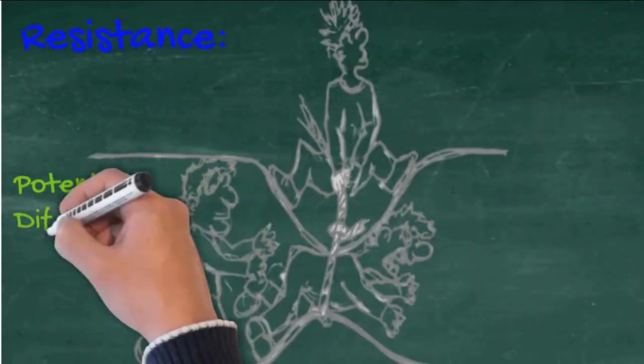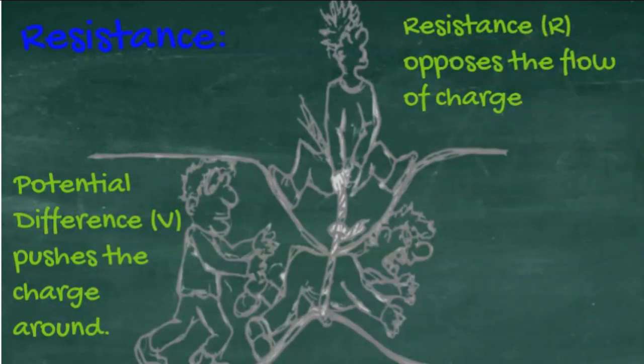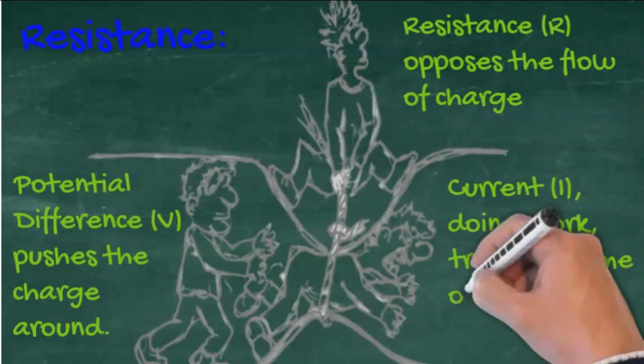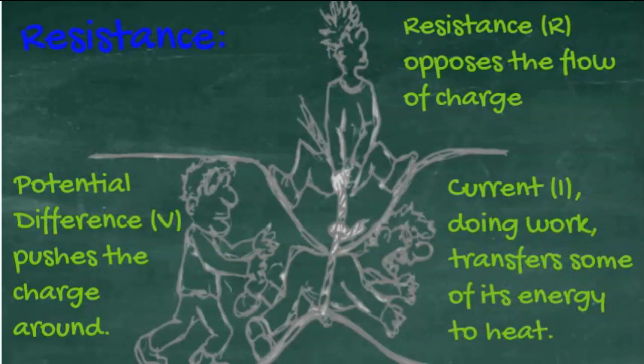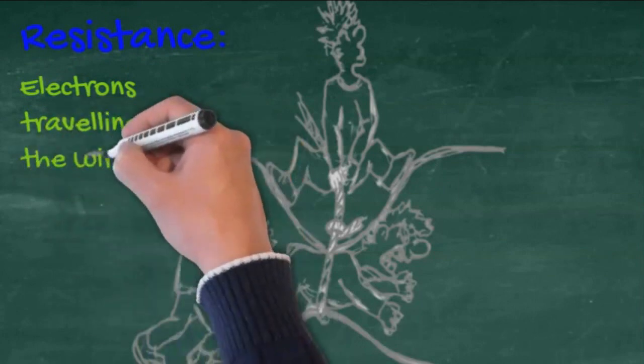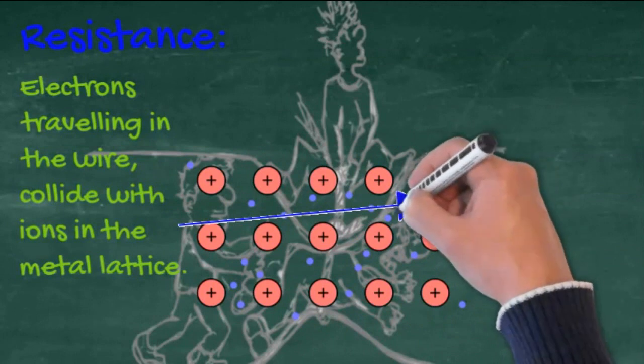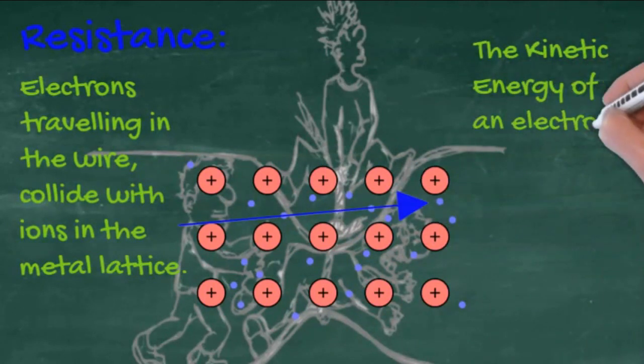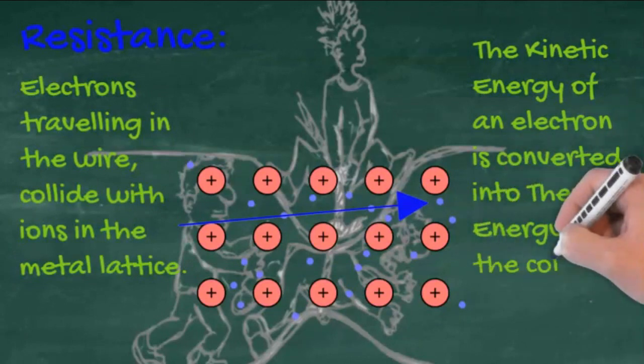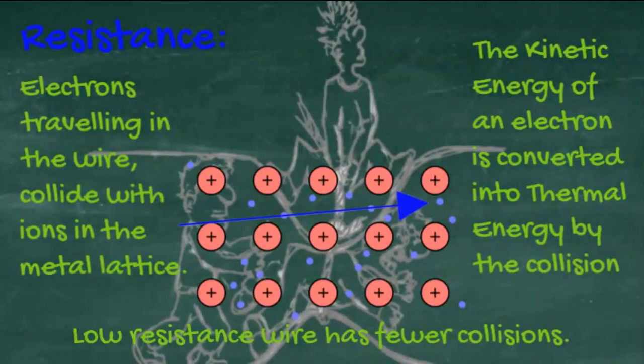If you think of a wire as a hollow tube, then the potential difference is attempting to push the electrons along that tube. Resistance is a constriction in the tube. And then finally, those electrons are transferring energy as they go through that constriction, causing the tube to heat up. Electrons traveling down a wire collide with metal ions in a lattice. And these collisions mean that the kinetic energy of the electron is converted into thermal energy, and it's that thermal energy that heats the wire. Low resistance wires have fewer collisions, therefore they get less hot.